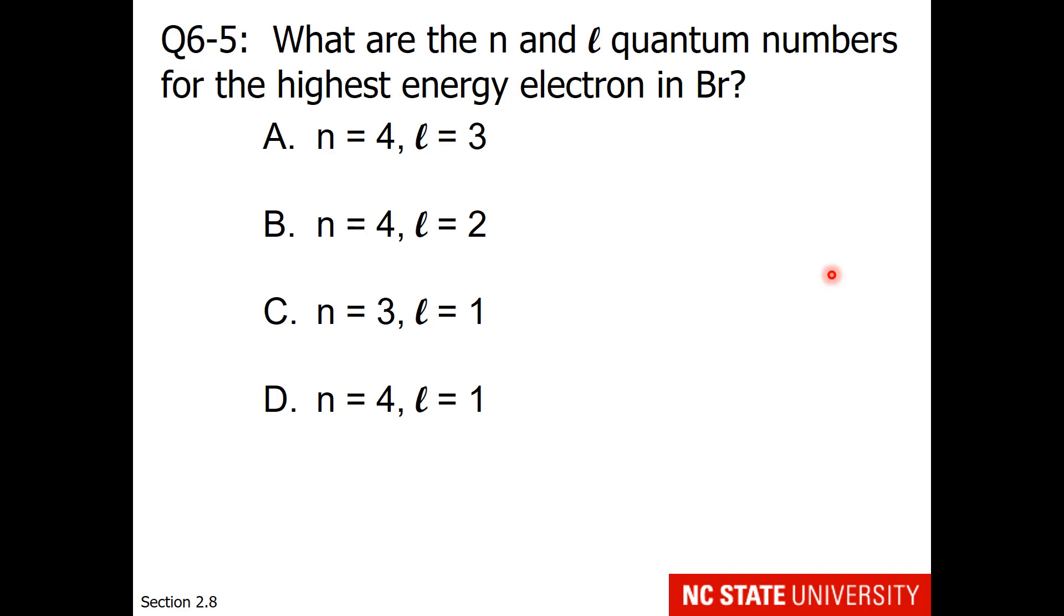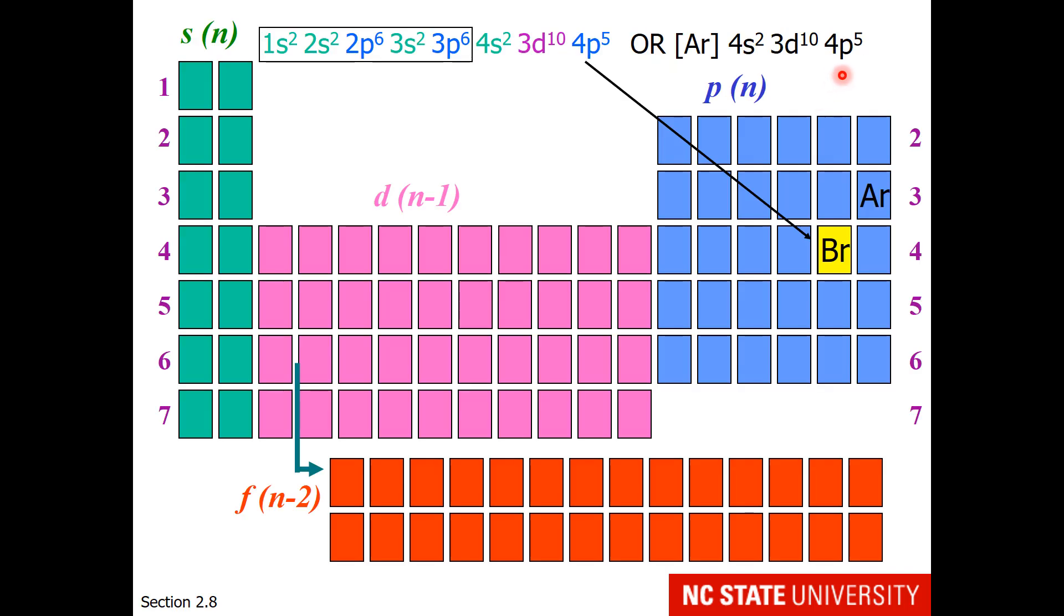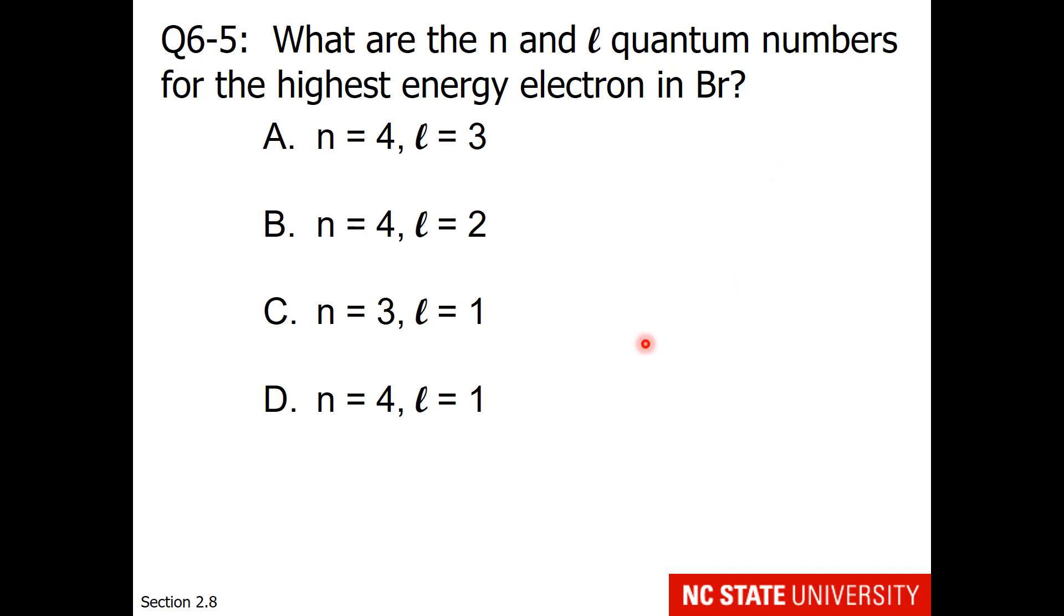This question asks, what are the N and L quantum numbers for the highest energy electron in bromine? Let's go back and look at that electron configuration. The last electron we place in bromine in the ground state is in a 4p orbital. So essentially, this question is, what are the N and L quantum numbers for a 4p orbital?